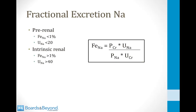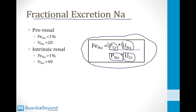The FENA can be calculated using plasma creatinine times urinary sodium, divided by plasma sodium times urinary creatinine — all measurable from a single blood and urine sample. In pre-renal failure, FENA should be less than 1% and urinary sodium less than 20. In intrinsic renal disease, FENA is greater than 1% and urinary sodium greater than 40. This helps determine whether patients need more fluids (pre-renal) or have intrinsically failing kidneys.